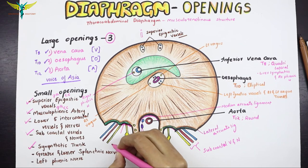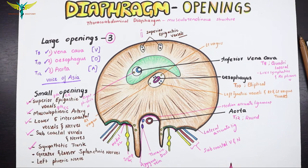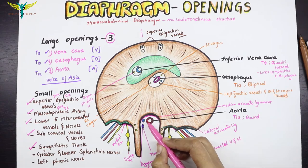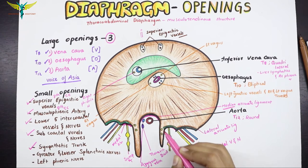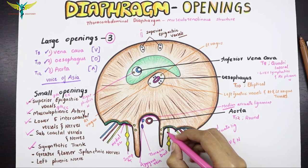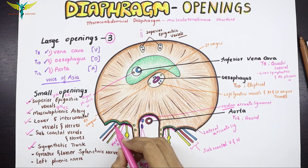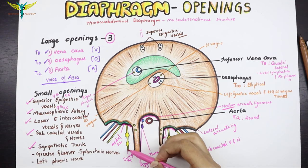Don't get confused about the parts of the arcuate ligament. The part that lies above the aortic opening is the median arcuate ligament. The parts beside the crura of the diaphragm are the medial arcuate ligaments, and the lateral-most part is the lateral arcuate ligament. The sympathetic trunk passes below the medial arcuate ligament.